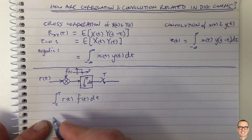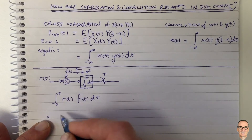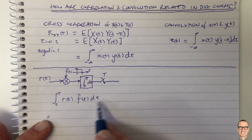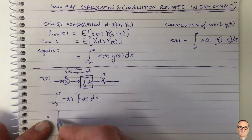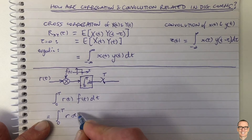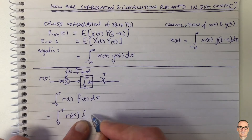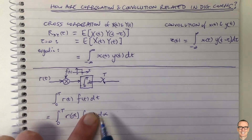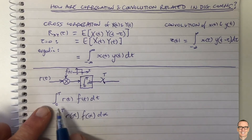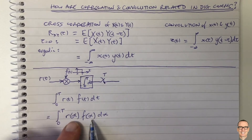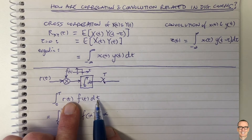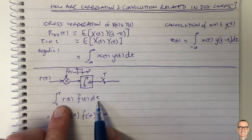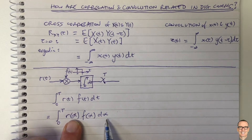An important point: in an integral like this, the variable we're integrating over is just a dummy variable. We can replace t with alpha, for example — integrating over alpha instead of t, as long as we replace all the t's with alpha. It doesn't matter that t represents time, because inside this integral it's just the variable you're integrating over. You may as well be integrating over alpha.